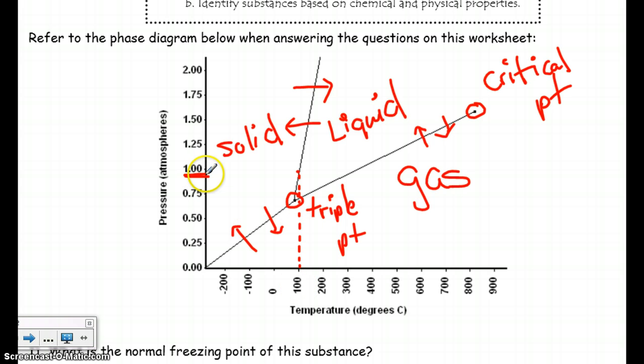If you needed the normal boiling point, you could do the same thing. You could just follow one atmosphere over to the boiling line, and then drop down. All right, so it's like 380 or so degrees Celsius.